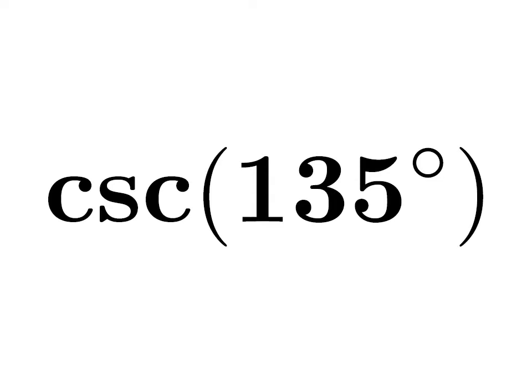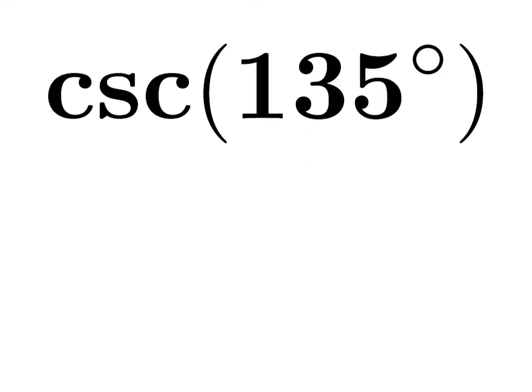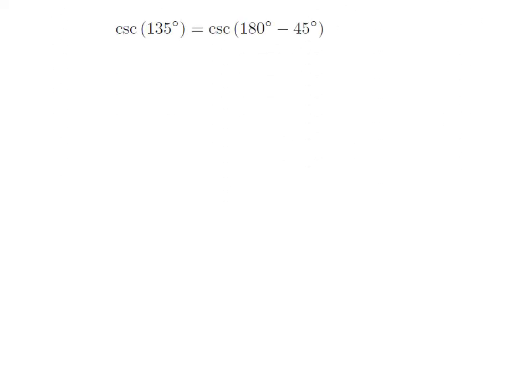In this video, we will learn to find the value of cosecant of 135 degree. As 135 degree is equal to 180 degree minus 45 degree,